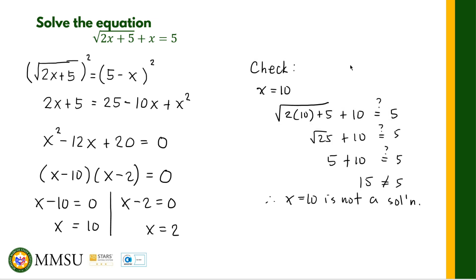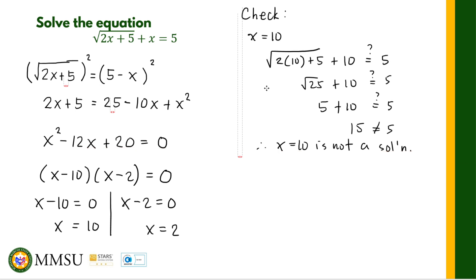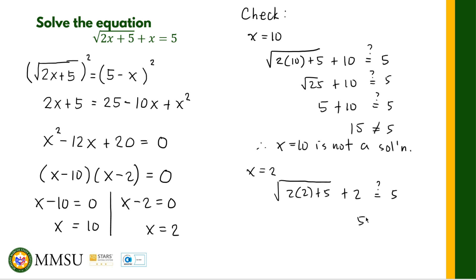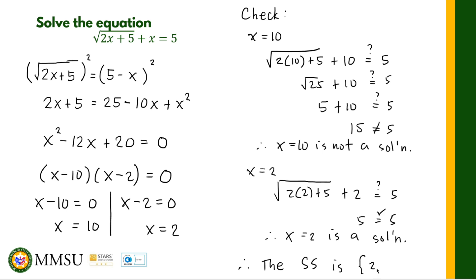Let us check the other solution, x equals 2. When x equals 2: square root of (2 times 2 + 5) plus 2 equals square root of 9 plus 2 equals 3 plus 2 equals 5. Therefore, 5 equals 5 — x equals 2 is a solution of the original equation. So the solution set is only {2}. The value x equals 10, which was solved but is not a solution of the original equation, is called an extraneous solution.